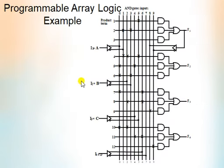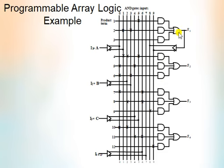This is the example circuit of programmable array logic. Here A, B, C, D are the input buffers. Using these input buffers, these are the programmable AND gates. The cross mark indicates the fuse between the input buffers. And here, these are the fixed OR gates. We get the output as F1, F2, F3, F4.